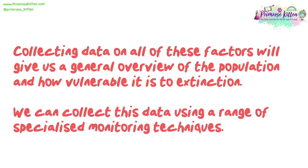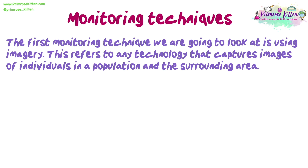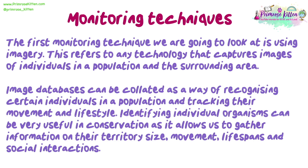We can collect this data using a range of specialised monitoring techniques. The first monitoring technique we're going to look at is using imagery. This refers to any technology that captures images of individuals in a population and the surrounding area. Image databases can be collated as a way of recognising certain individuals in a population and tracking their movement and lifestyle.